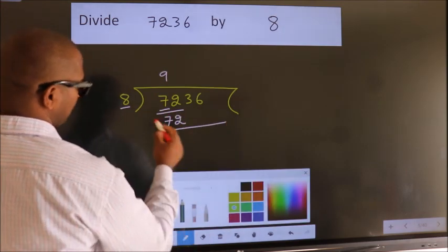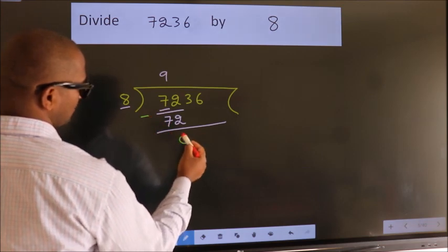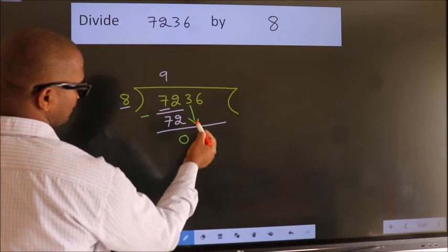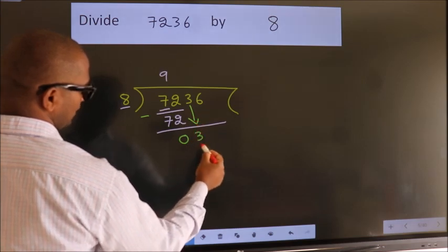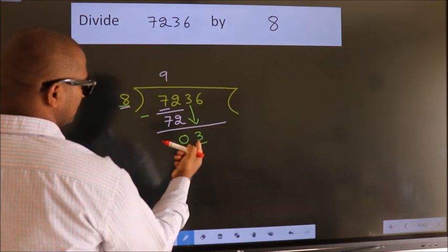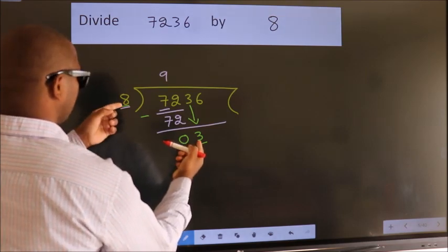Now, we should subtract. We get 0. After this, bring down the beside number. So, 3 down. Here we have 3, here 8. 3 is smaller than 8.